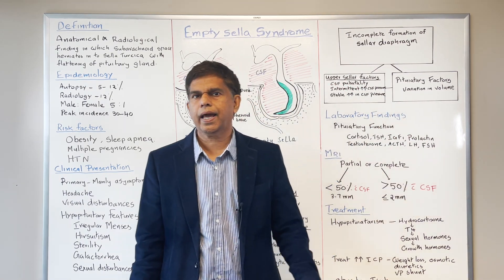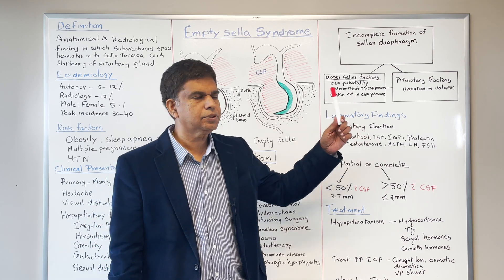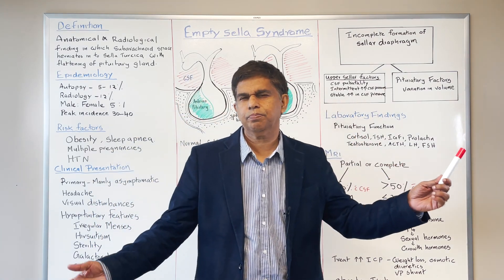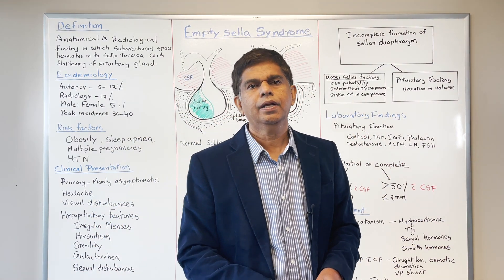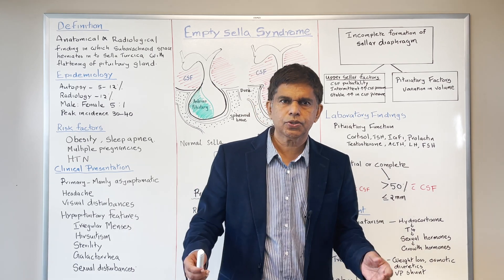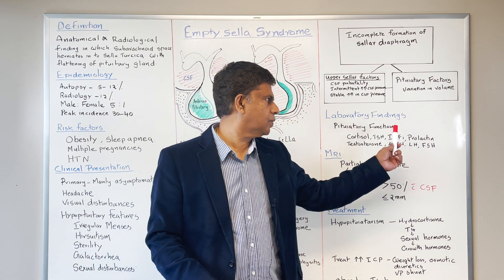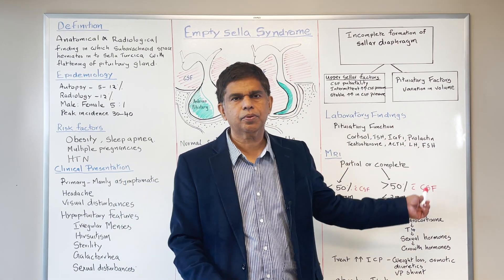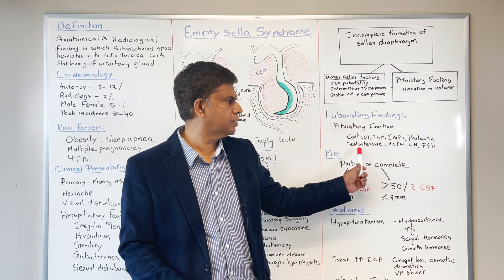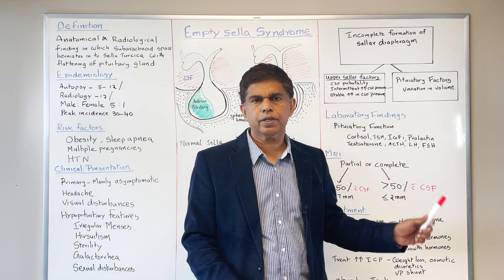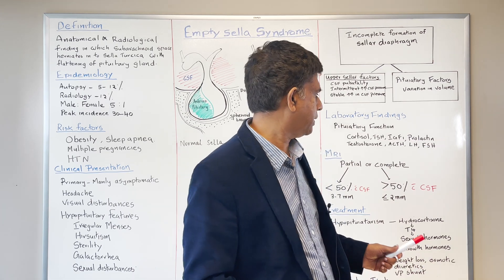What are the labs we should order? The laboratory findings focus on pituitary function. We're looking at TSH, cortisol, IGF-1, prolactin, FSH, LH, testosterone — all of these pituitary hormones need to be checked out.